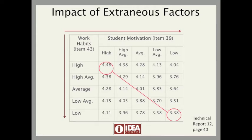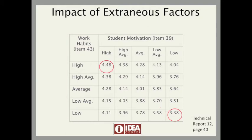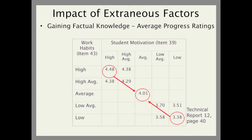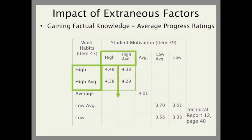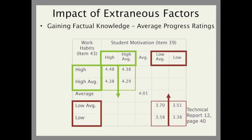In the cells, you see the average progress ratings for classes when this objective was selected as important or essential by the instructor. You will note here that students who fall in the top 10% of the IDEA database rating their work habits and motivation as high rate their learning more than one whole point higher than those students who are in the bottom 10% of the IDEA database rating their work habits and motivation as low. Since the purpose of adjusting scores is to level the playing field when comparisons need to be made between instructors, you will see your adjusted scores go down when the students in your class report higher than average motivation and work habits. Your adjusted scores will go up when your students report lower than average motivation and work habits.